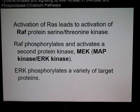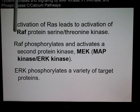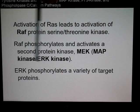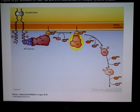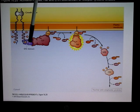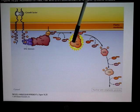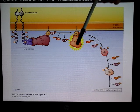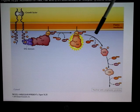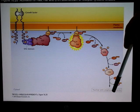Once RAS is activated, it activates RAF, which then activates MEK, which then activates MAP kinase — ERK. The ERK that gets phosphorylated at the end can go to the nucleus. In the diagram: growth factor stimulates, phosphorylations occur, the exchange factor binds, RAS becomes activated, RAF is activated and recruited to the membrane, then MEK, then ERK, and then ERK goes into the nucleus.